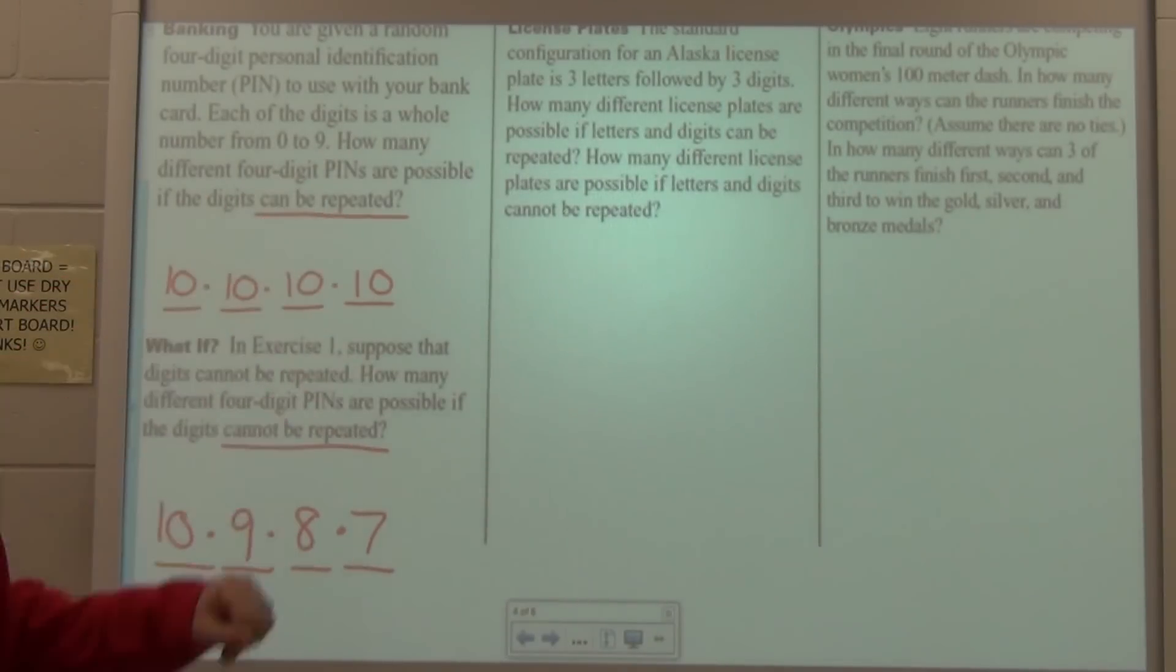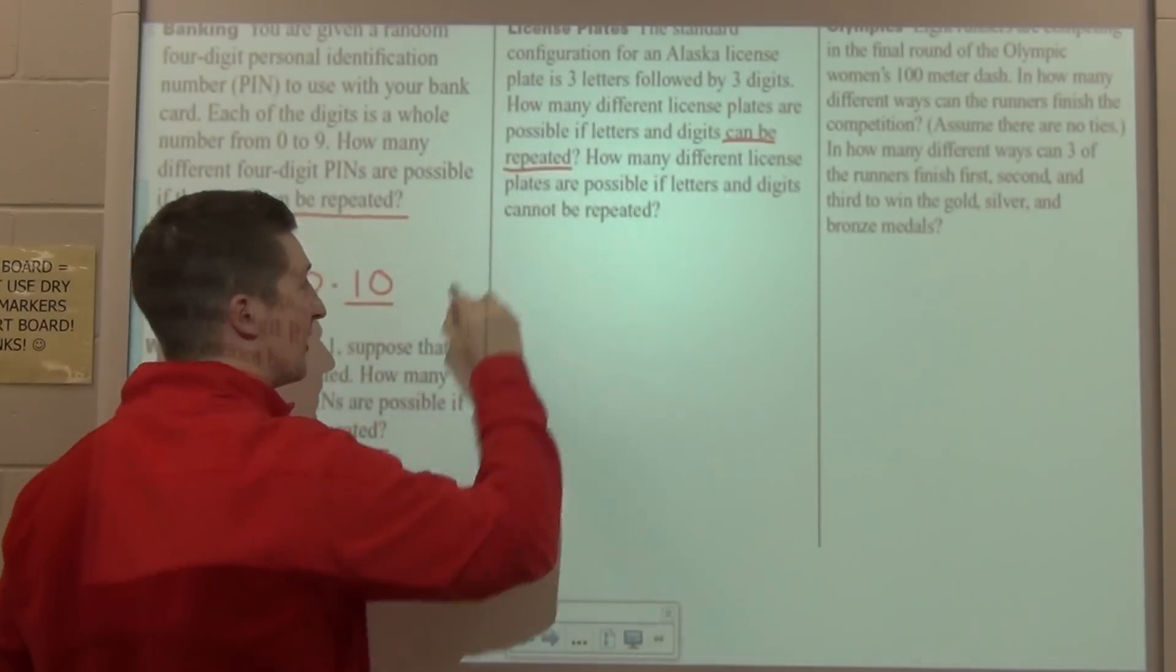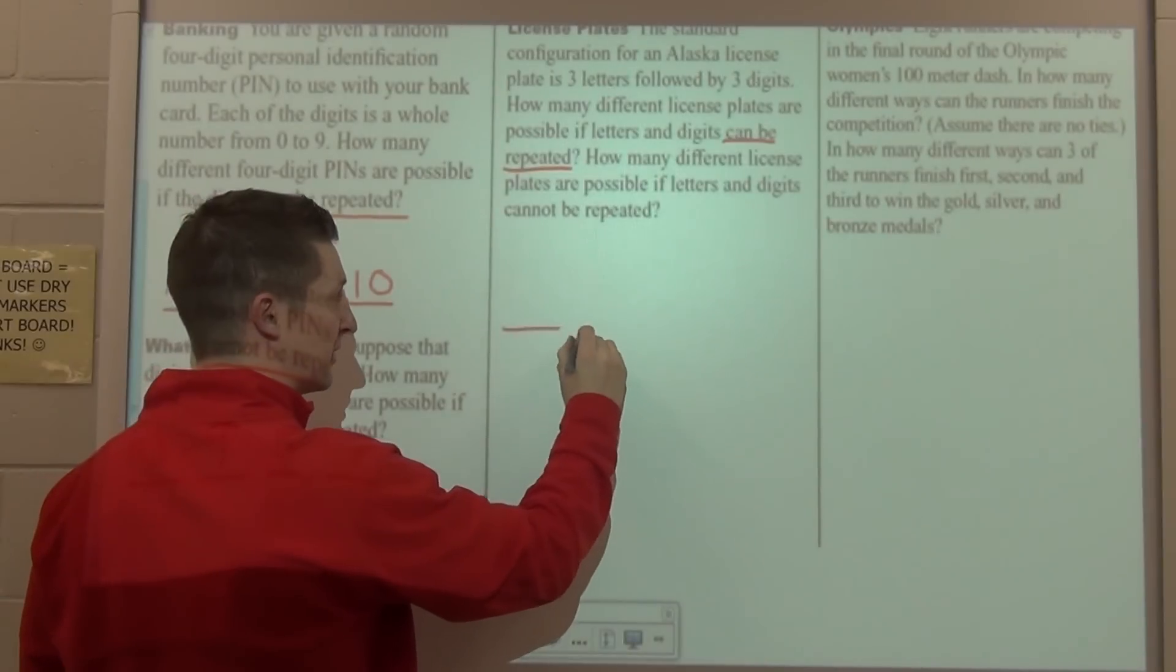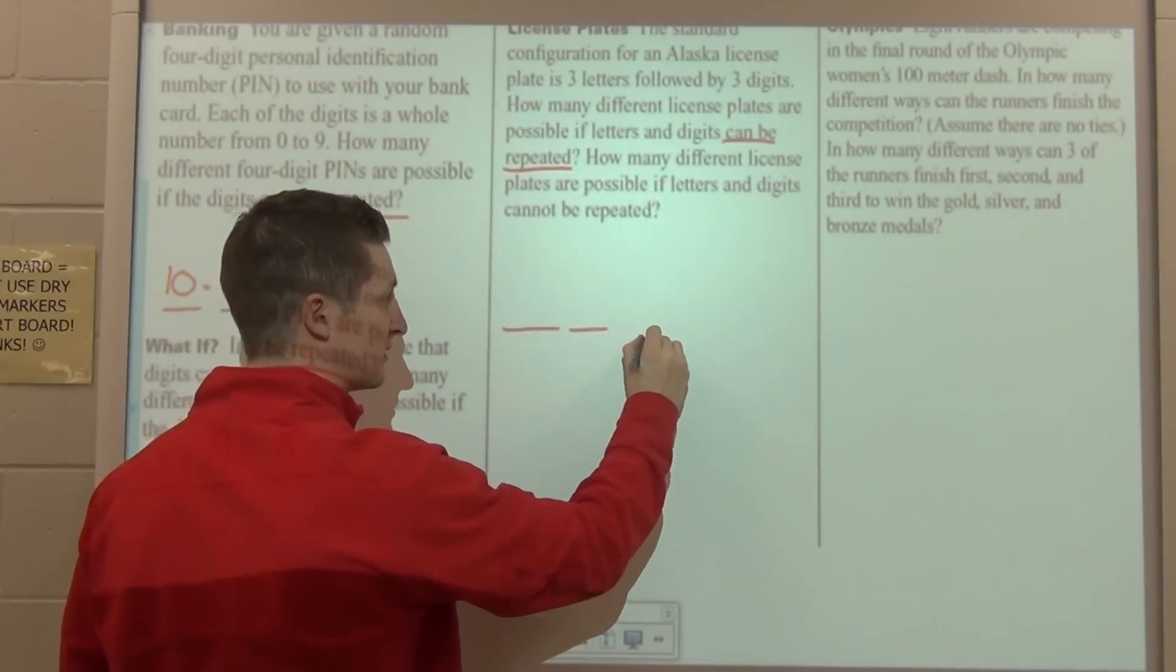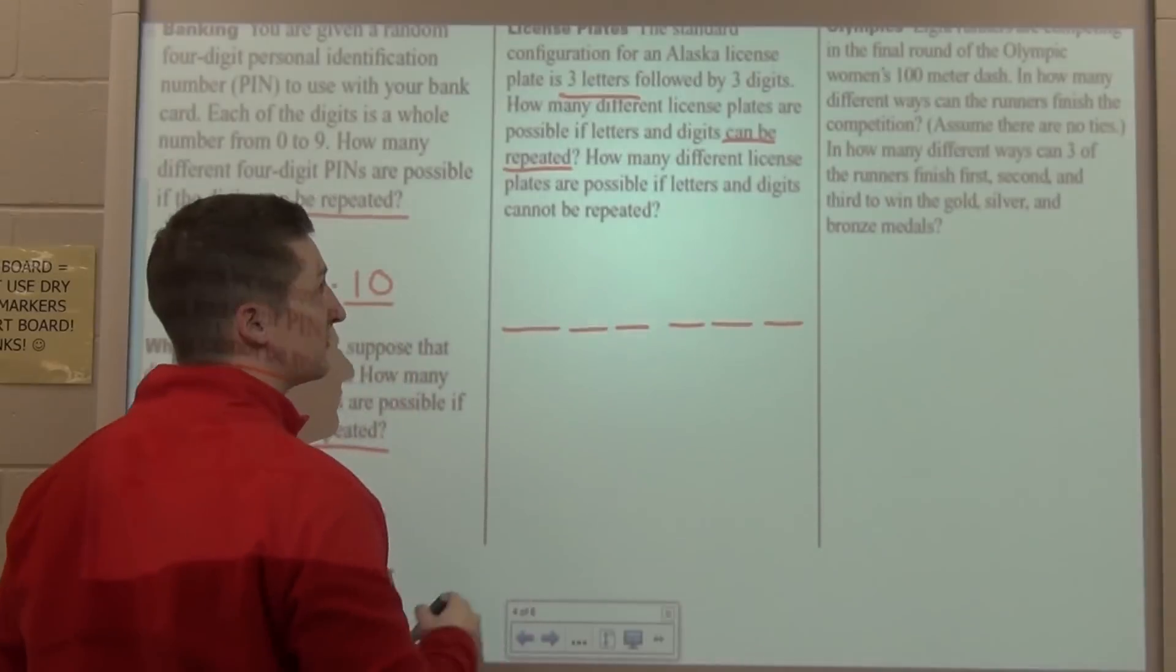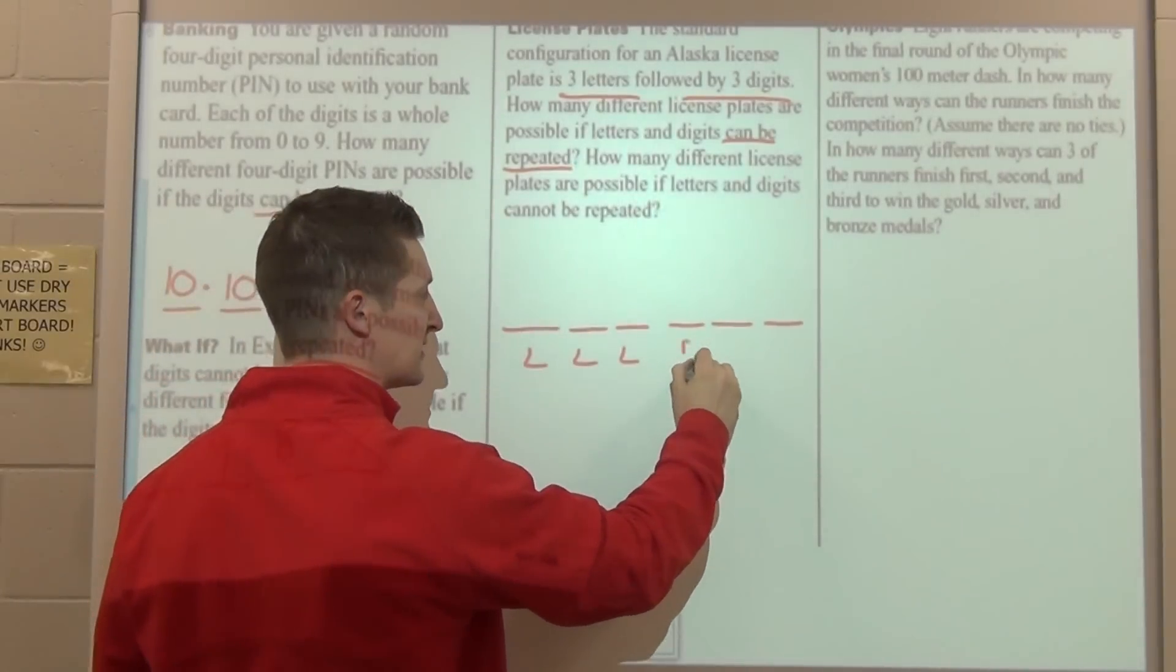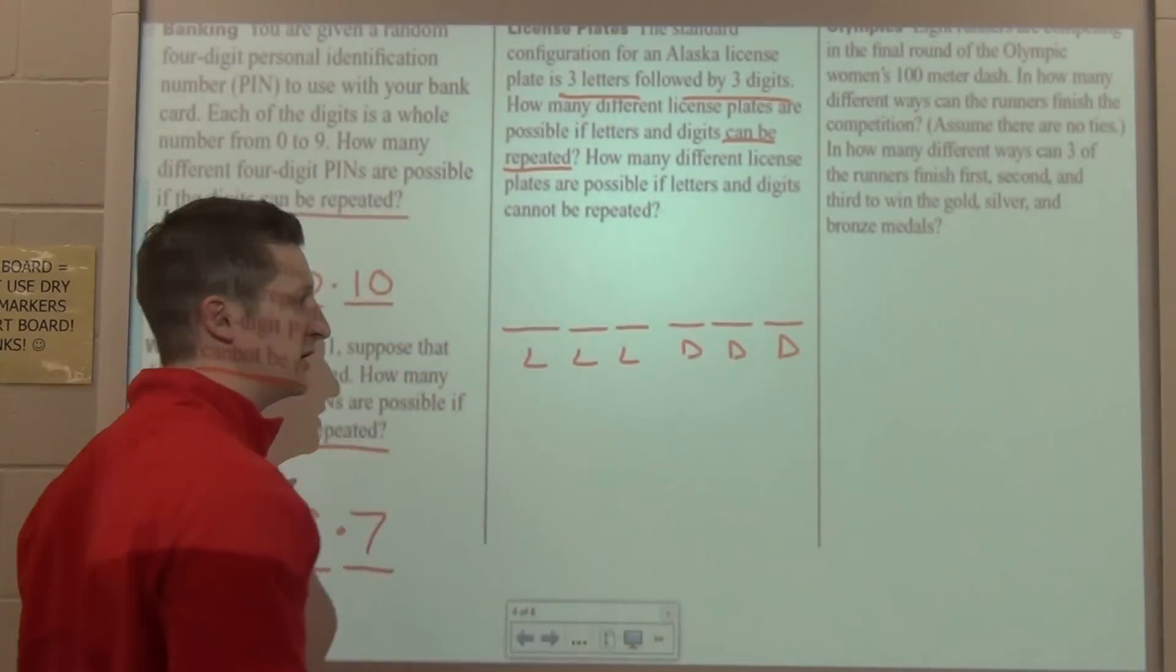Third example, license plates. Standard configuration for an Alaska license plate is three letters followed by three digits. How many different license plates are possible if letters and digits can be repeated? How many different license plates are possible if letters and digits cannot be repeated? So, let's do the can be repeated first. Again, I think setting this up, I would go ahead and put, let's see, my license plate's going to look something like this. It's going to have six parts to it, right? It said three letters followed by three digits. So, here I've got letters, and here I've got digits. Let's put L and D to represent those.